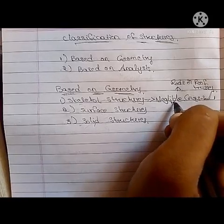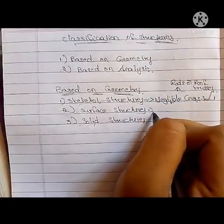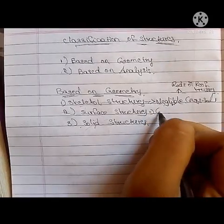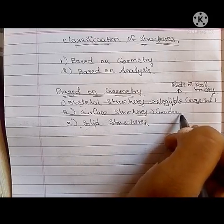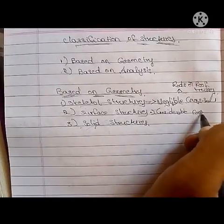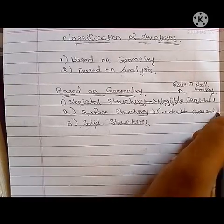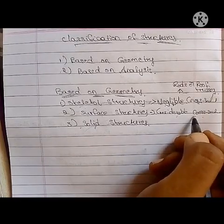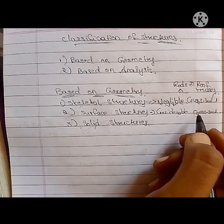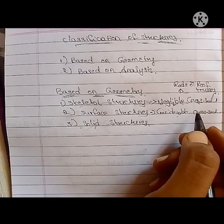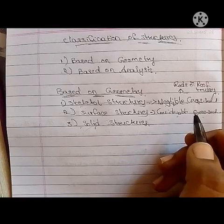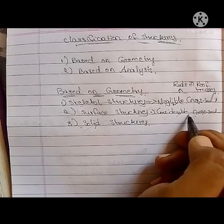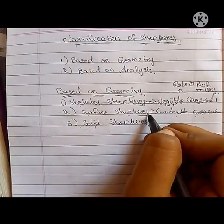Coming to surface structures, these are structures which have considerable cross sections. Unlike skeletal structures where cross sections are negligible, surface structures have considerable cross sections. Examples of surface structures are slabs and beams.